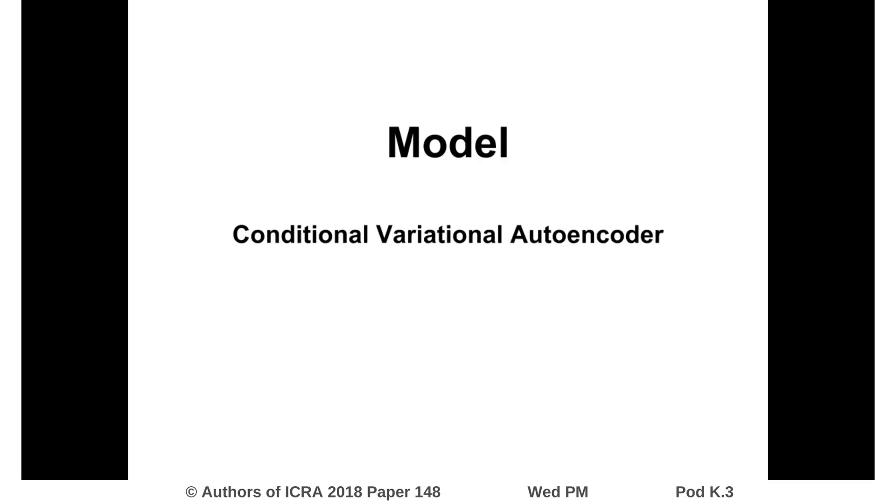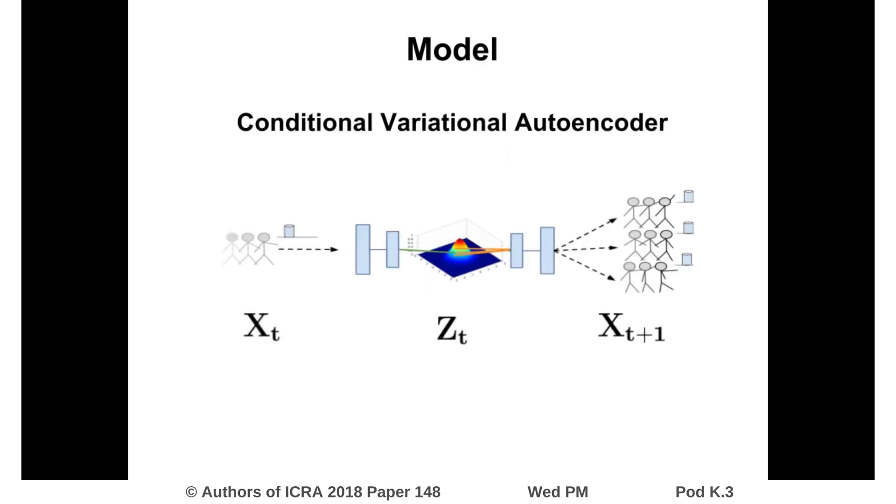To model the future motion, we make use of conditional variational autoencoders. We condition on the past observation. This input is encoded by a neural network into a distribution over latent variables. Samples from this are decoded by another network to produce a prediction over future trajectories.